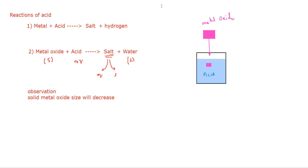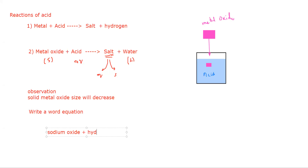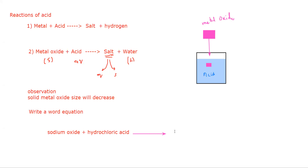The second thing is writing an equation. For a word equation: if I say sodium oxide plus hydrochloric acid — hydrochloric acid gives chloride salts, sulfuric acid gives sulfate salts, nitric acid gives nitrate salts. So what will be the product if we add sodium oxide to hydrochloric acid? It will form a chloride salt, so the result is sodium chloride plus water.